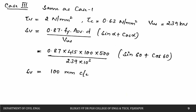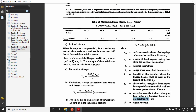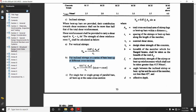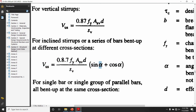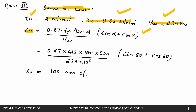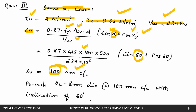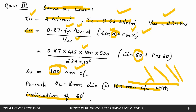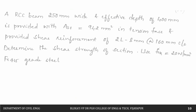Case 3 — inclined stirrups at 60 degrees. τv = 2 N/mm², τc = 0.63 N/mm², and VUS = 239 kN remain the same as Case 1. Using the inclined stirrup formula with sin α + cos α term for α = 60°, the required spacing works out to 100 mm center to center.